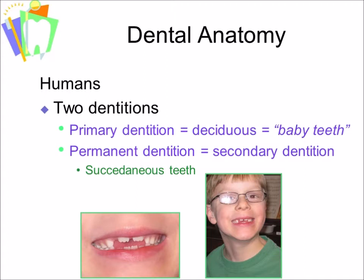The teeth that are not succedaneous in the permanent dentition are the permanent molars. The permanent molars are not succedaneous as they do not replace any primary teeth. Remember, there are fewer primary teeth than permanent teeth.